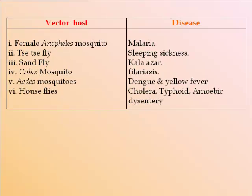Vector, host, and disease caused: Female Anopheles mosquito causes malaria; tsetse fly causes sleeping sickness; sand fly causes kala-azar; Culex mosquito causes filariasis; Aedes mosquito causes dengue and yellow fever; house flies cause cholera, typhoid, and amoebic dysentery.